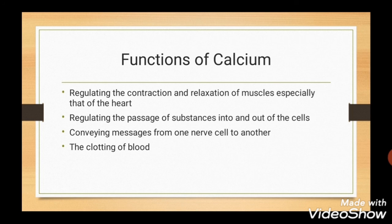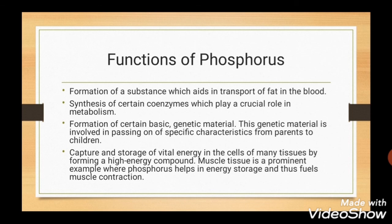Functions of calcium: it helps in regulating the contraction and relaxation of muscles, especially the heart. It also regulates the passage of substances into and out of the cells, helps in conveying messages from one nerve cell to another, and plays an important role in clotting of blood. Functions of phosphorus: it helps in formation of a substance which aids in transport of fat in the blood, helps in synthesis of certain coenzymes which play a crucial role in metabolism, assists in formation of certain basic genetic material — which is involved in passing on of specific characteristics from parents to children — and helps in capture and storage of vital energy in the cells by forming a high energy compound.